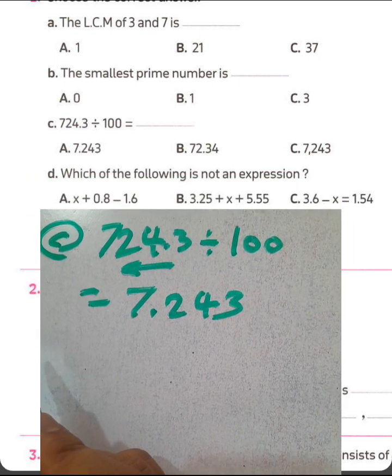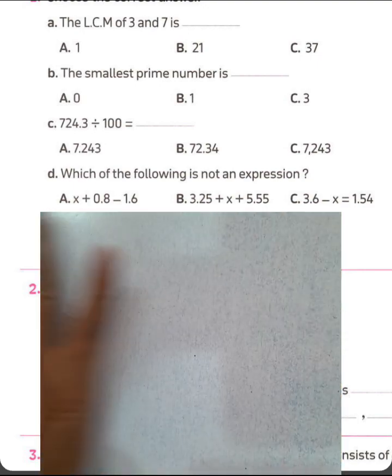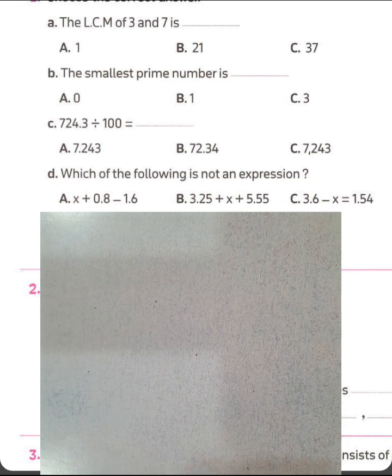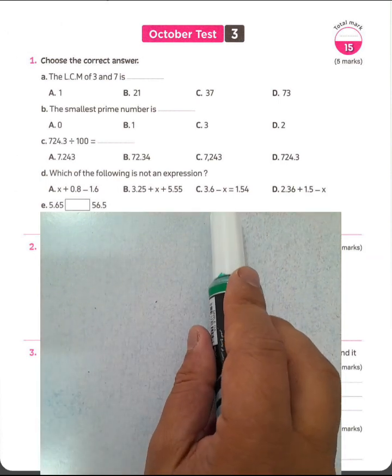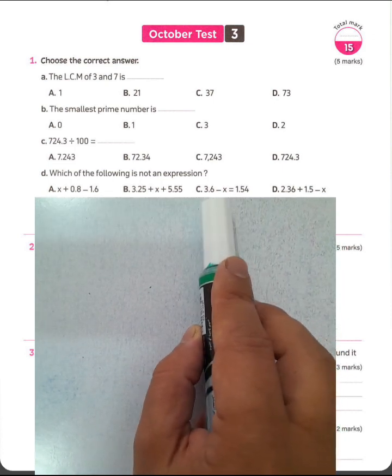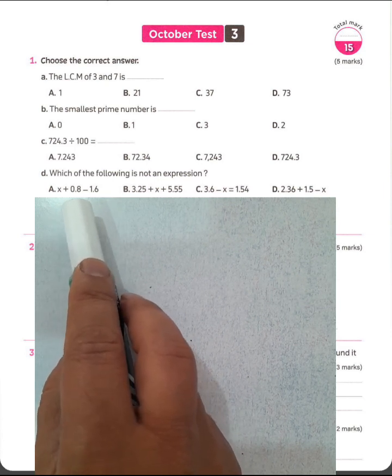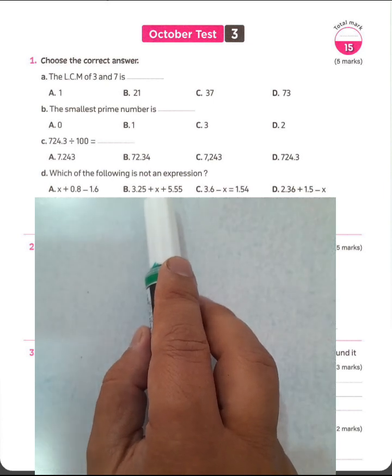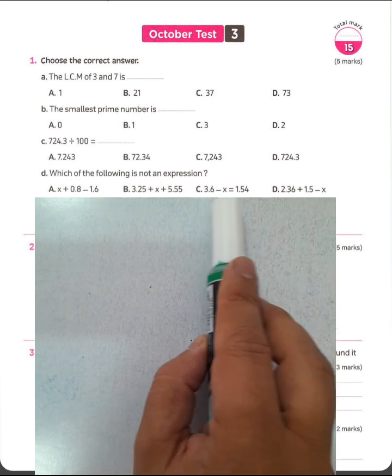Question letter D, which of the following is not an expression? What's the difference between expression and equation? The expression contains a lot of terms. And we don't have in the expression, the sign equal to. But the equation, we have the sign equal to. We must choose letter C, because it's equation. We have 3.6 subtract by x equals 1.54, it's equation. Letter A, expression. We don't have the sign equal between any terms here. And this, we call it what? It's expression. And letter B, expression.